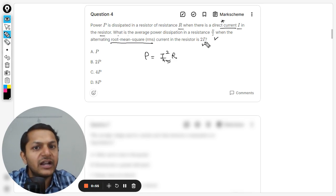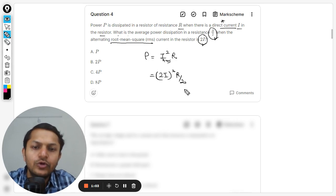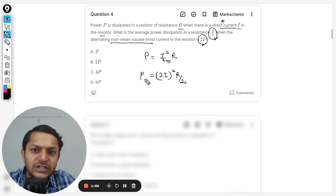What is the average power dissipated if the RMS value is 2I? This value will be 2I square, and this time the resistance used is R by 2, so I am plugging this value here. So this is the new power, I'm just calling it P2.